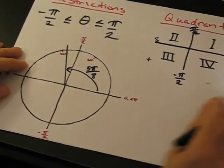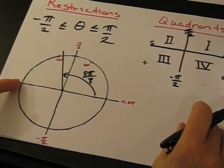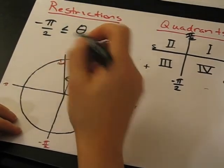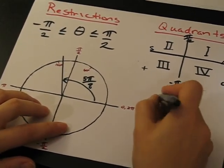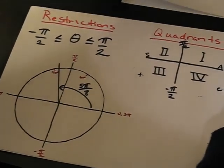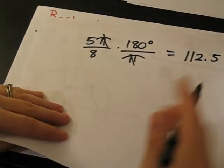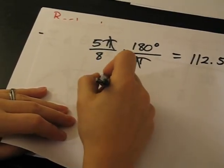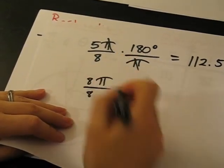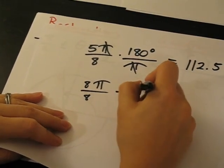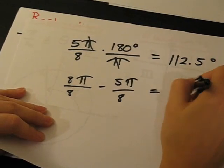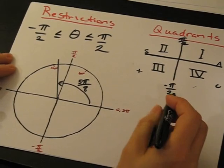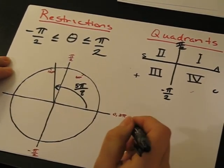So basically what we have to do is we have to determine the reference angle, which is this space right here. And the easiest way to do that is to take a whole pi and subtract our five-pi over eight, which leaves us with three-pi over eight. So we know that this reference angle is actually going to be 3-pi over eight.